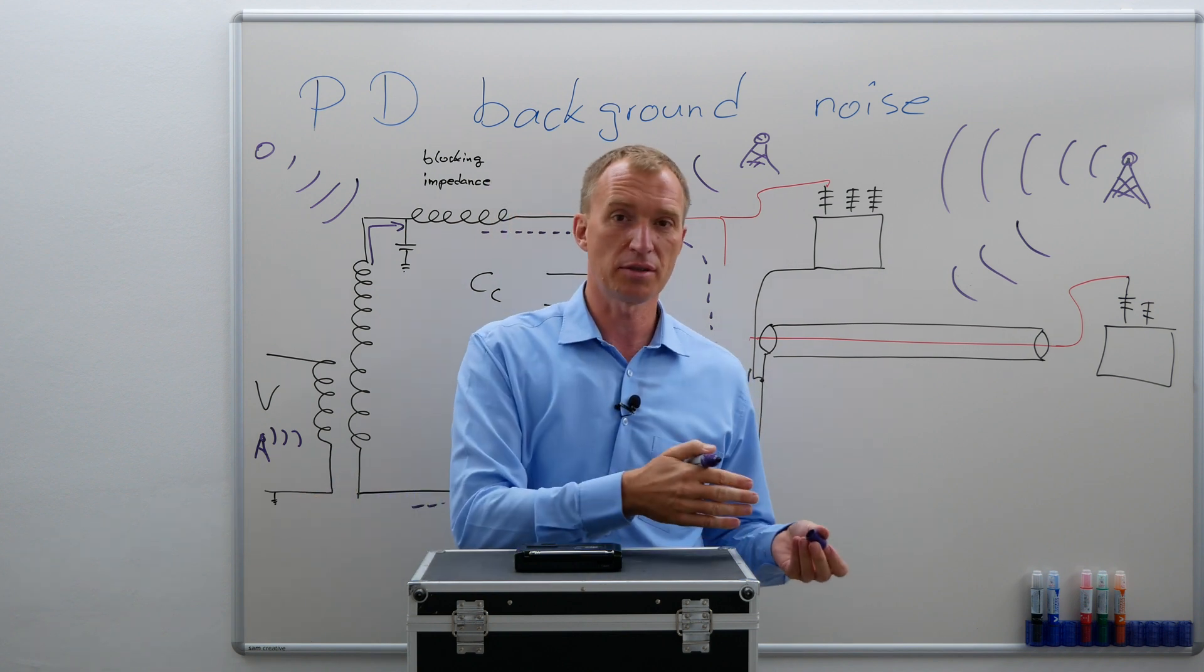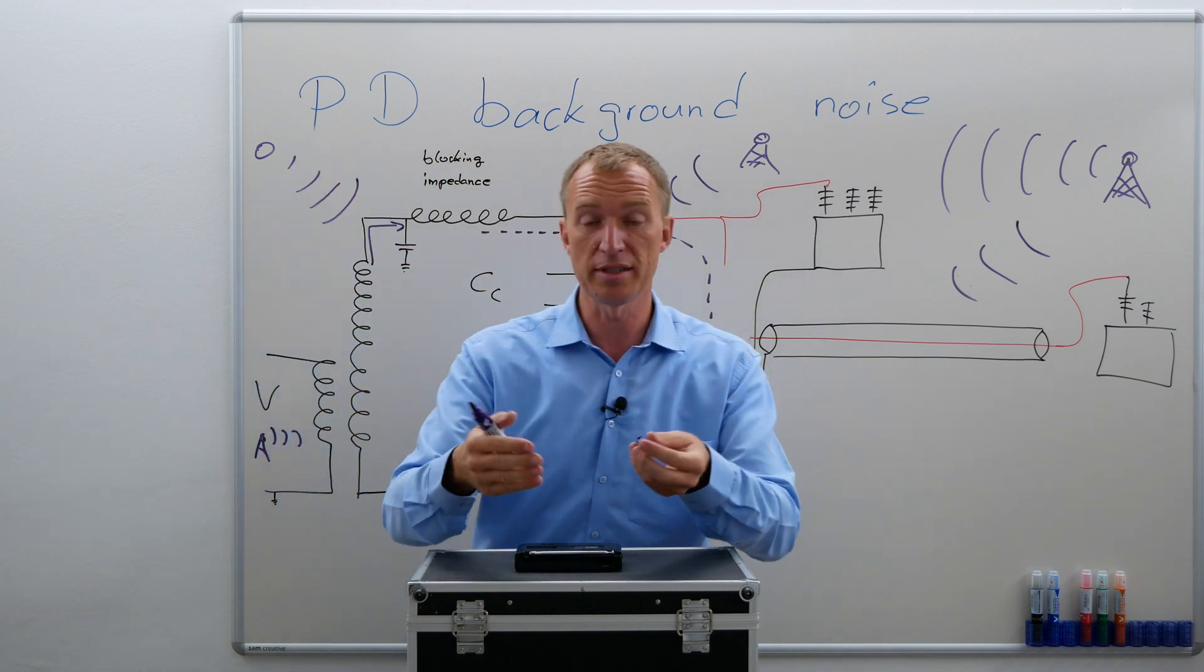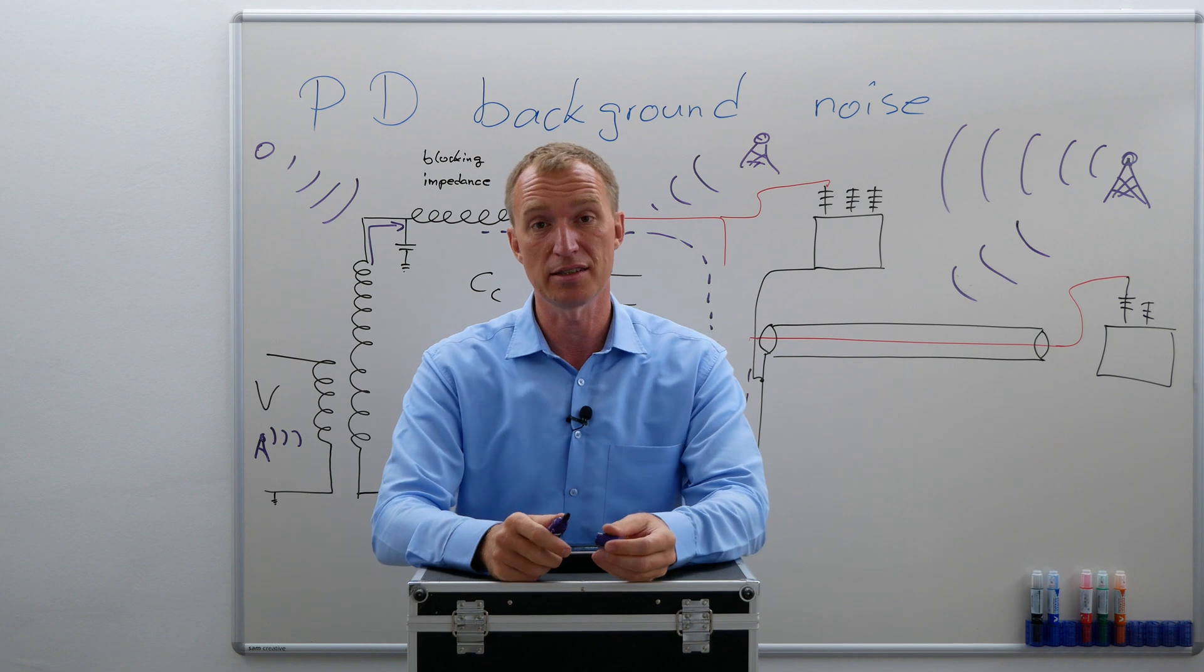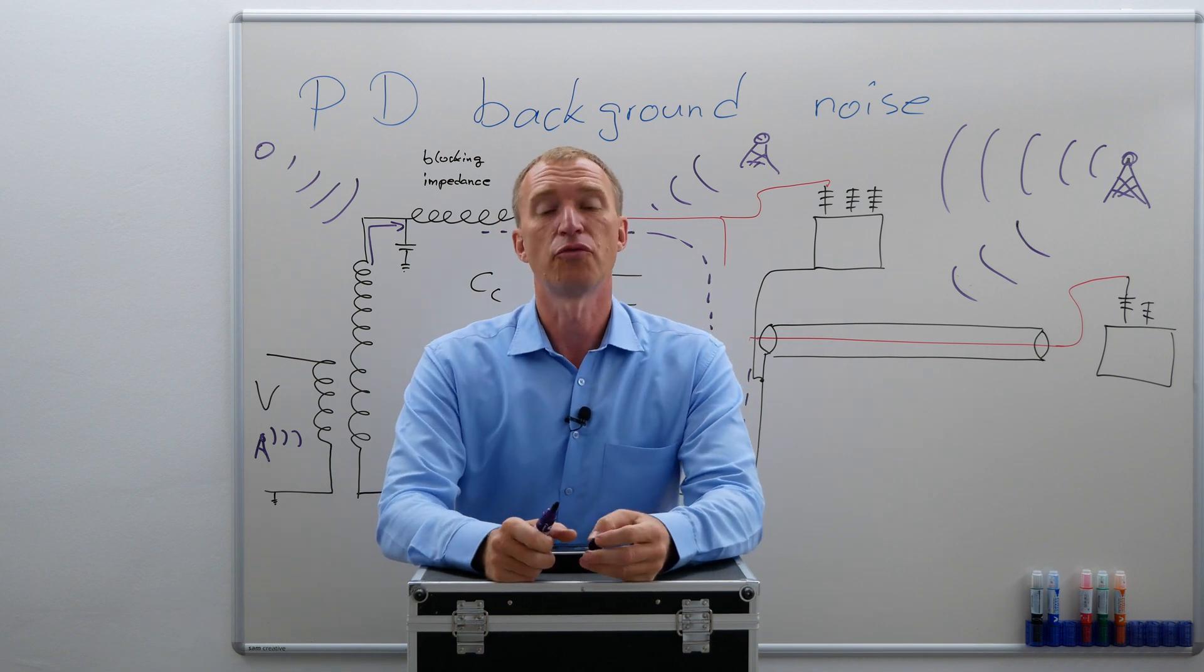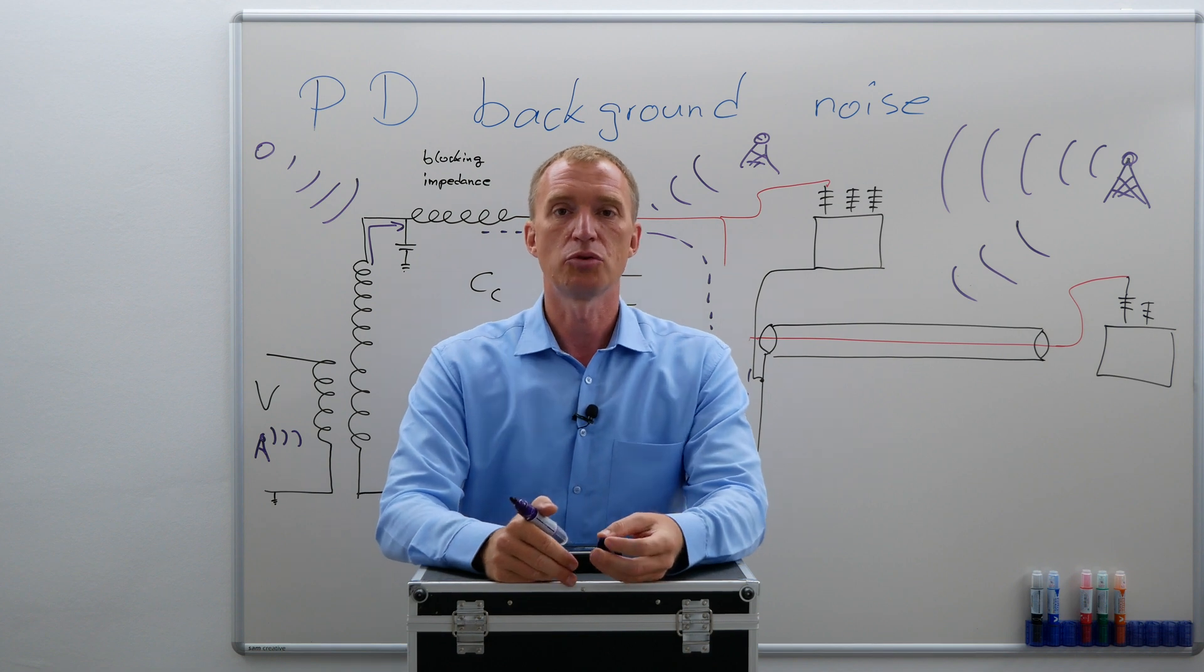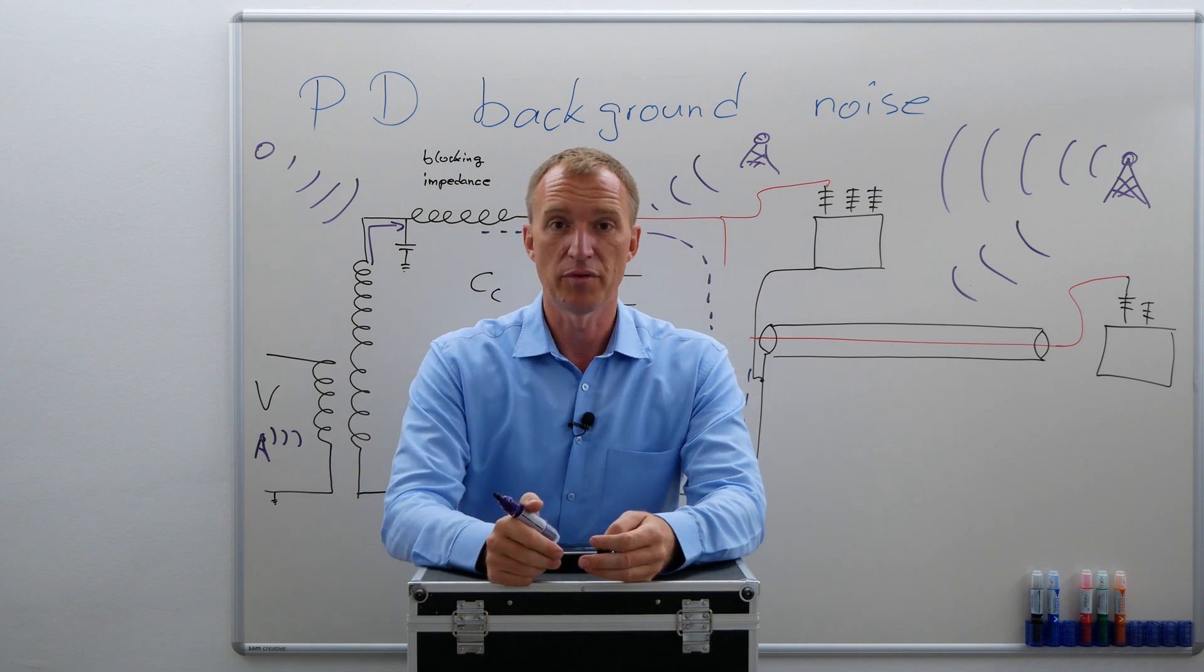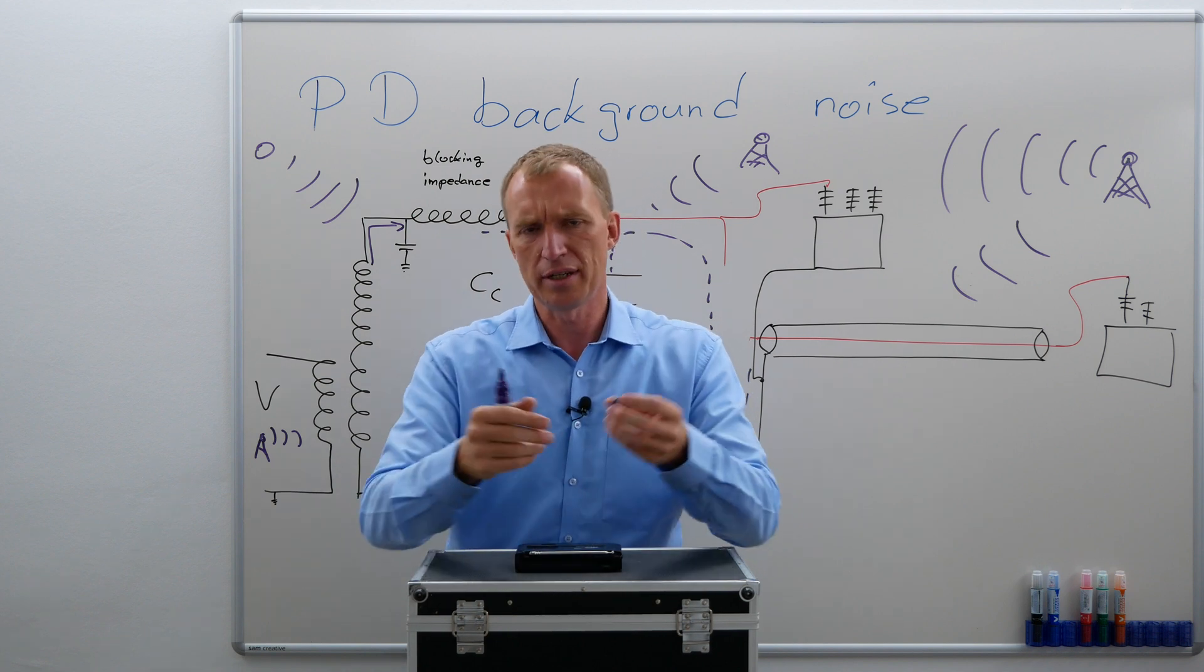There are some manual things you can do. One of the most important ones is the blocking impedance. That is the reason it is actually required by the IEC 60270. And fortunately, most digital devices give you a possibility to reduce the noise in one way or the other. Some of them do it automatically. Some of them you do it manually, digitally.